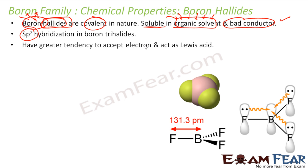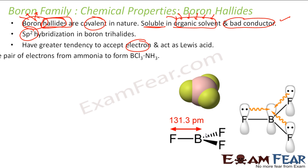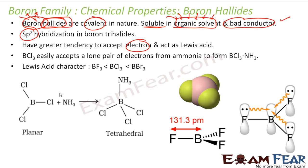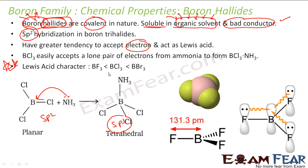Boron trihalides have a great tendency to accept electrons, which makes them Lewis acids. Why? Because boron is electron deficient — it has only 6 electrons — so it will accept electrons from ammonia. The Lewis acid character decreases in the order BBr3 > BCl3 > BF3. Please pay attention here — this is the tricky part.